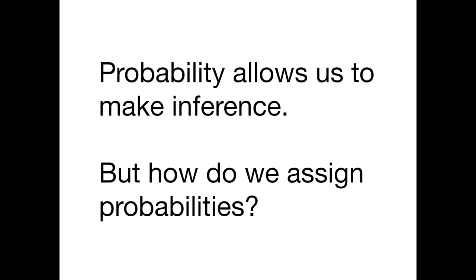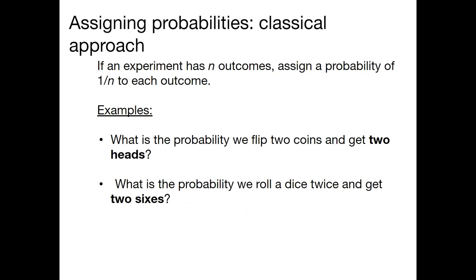So probability allows us to make inference, but how do we assign probabilities? That is, where do they come from? Here are a few ways. First, we can use a classical approach to understanding probability. If we have an experiment and it has n outcomes, we can assign a probability of 1 over n to each outcome. These examples include, what is the probability we flip two coins and get two heads? What is the probability we roll a dice and get two sixes? These are examples where we know what the outcomes must be, and so we can use probability in this classical approach to assign what those values are.